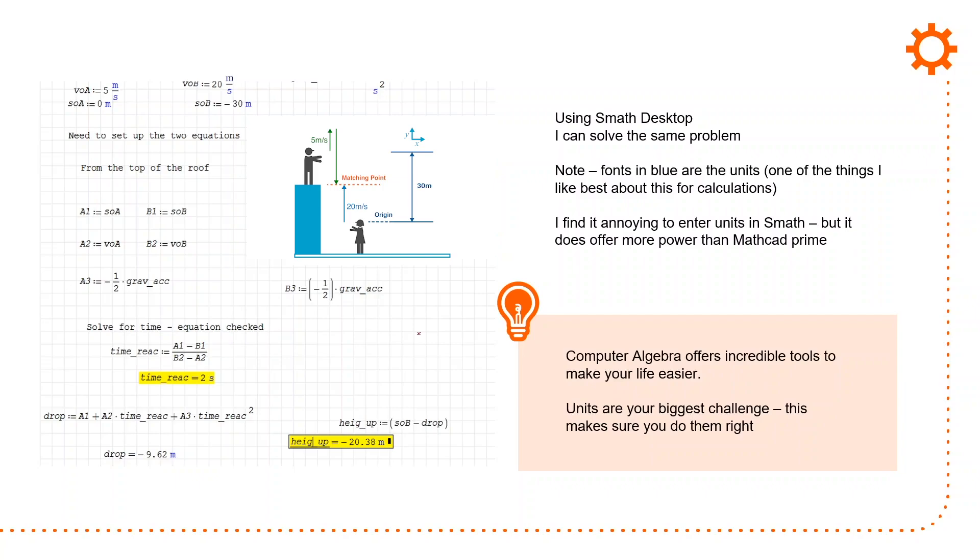I can do this also in two different techniques. This is the S-Math desktop approach. And you'll see that I have all the same numbers. I've got the five meters per second, same figure. In order to make my typing a little bit easier, I define everything as a1, b1, and all the rest. And I end up with a3 equals one-half g acceleration. And I have the same expression as I had before right here. And I get the same time.